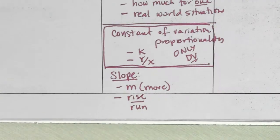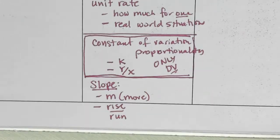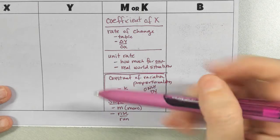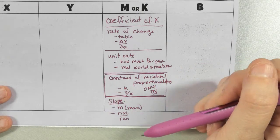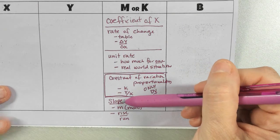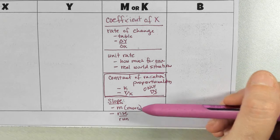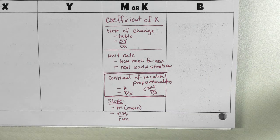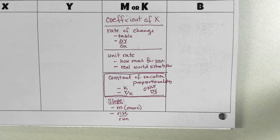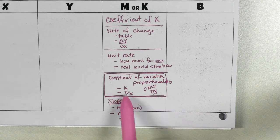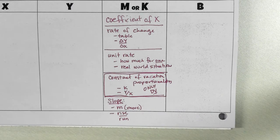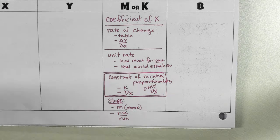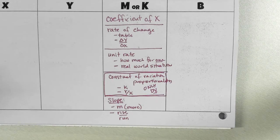You could literally use any of these names for slope, but slope is the one I use the most — I call it slope all the time. I rarely call it unit rate or rate of change. I even call K the slope, and I'm sure I'm going to get some heat for that, but it's all slope to me.